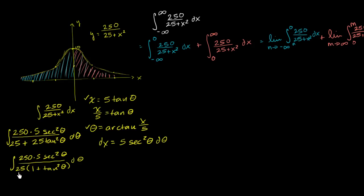Now we can simplify. This equals 250 times 5 secant squared theta over 25 times 1 plus tangent squared theta d theta. So 25 goes into 250 ten times, and 1 plus tangent squared theta equals secant squared theta — you can verify by writing tan²θ as sin²θ/cos²θ, adding 1 = cos²θ/cos²θ, giving sec²θ. So secant squared cancels, leaving just 50 d theta.